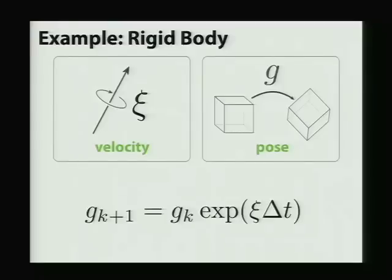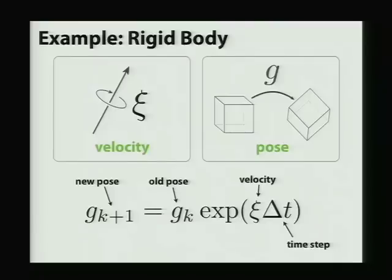And once we have our configuration and velocity represented in this way, performing the integration on the Lie group is actually very simple. To get our new pose from our old pose, we simply multiply the velocity times the time step. We plug that into the exponential map, which is going to integrate it over time. And this is actually the same thing for any Lie group integrator, not just the rigid body.